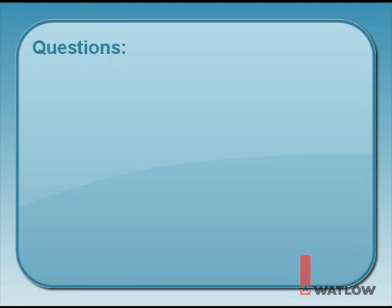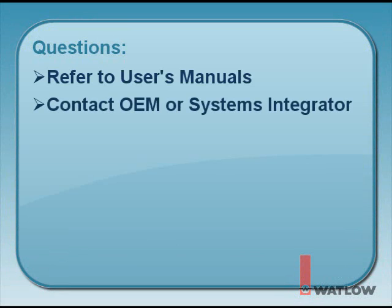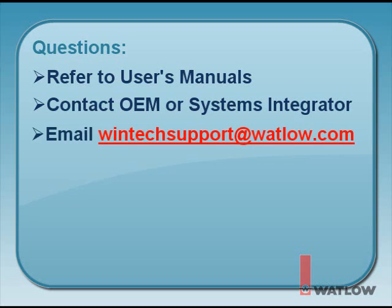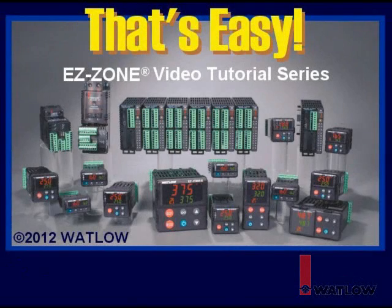Still have questions? Refer to any supplied user's manual for the equipment and controller. Electronic copies of EasyZone controller manuals are available on Watlow's website. Questions on the equipment should be directed to the original equipment manufacturer or systems integrator, as only they know the equipment and the required controller settings. For questions specific to the controller, email Watlow Technical Support at WintechSupport@Watlow.com, or call and speak to an application engineer at 507-494-5656 between 7:00 AM and 5:00 PM Central Standard Time. If you email or call Watlow, be sure to have the controller's model number. We hope you found this installment of That's Easy helpful. We'll explore additional topics in other installments.